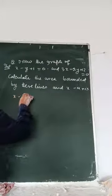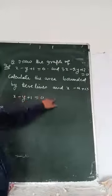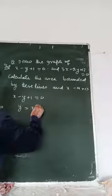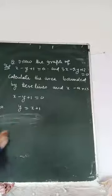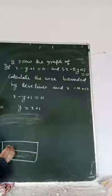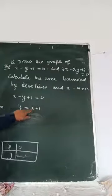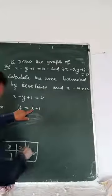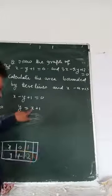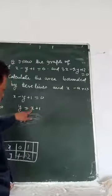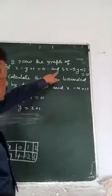First equation: x minus y plus 1 equals to 0. Take y to this side, so y will be x plus 1. Make a table of this. Put x equals to 0: 0 plus 1 is 1, so y equals to 1. Put x equals to 1: 1 plus 1 is 2. Put x equals to 2: 2 plus 1 is 3. So this equation table is done.